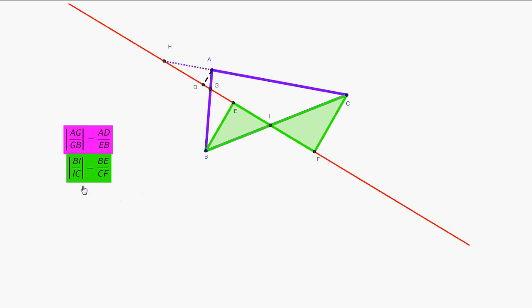So, the ratio of common parts is going to be equal. So, BI over IC, which is the ratio of division that we need, is equal in magnitude to the ratio BE over CF.